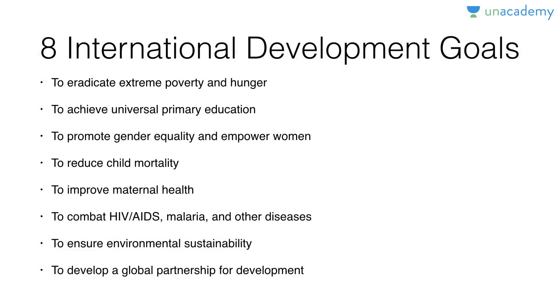To remember the eight goals, we use a rhyme: one is sun, two is shoe, three is tree, four is boar, five is hive, six is sticks, seven is heaven, eight is gate, nine is line, ten is hen. We'll utilize that mnemonic to learn the goals one by one.